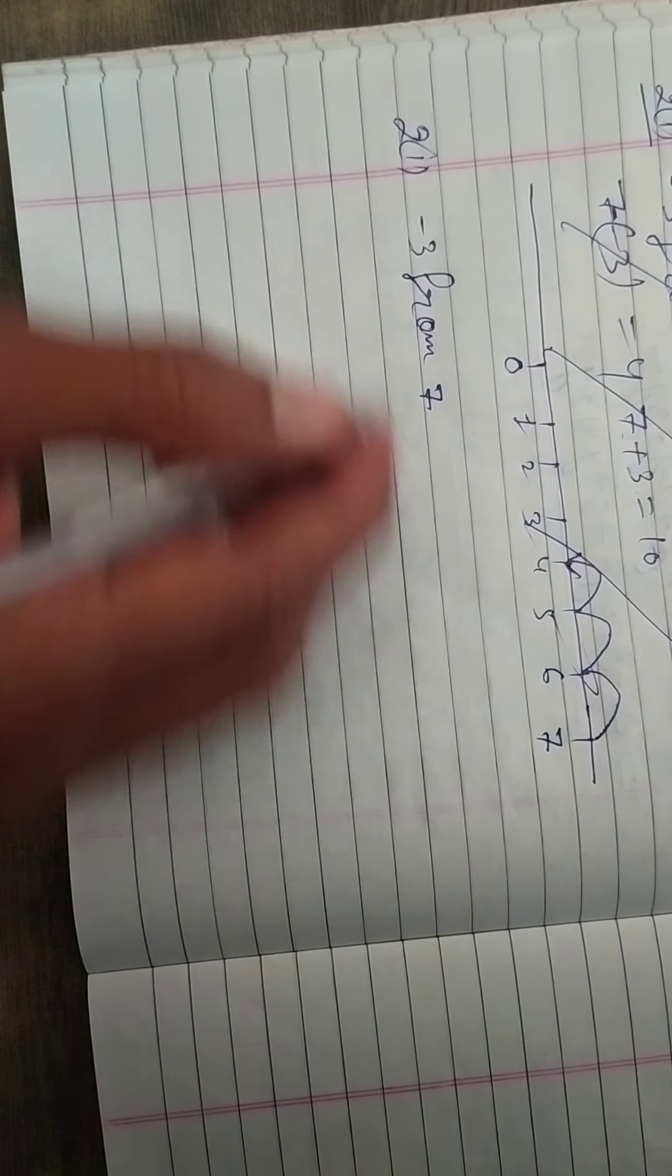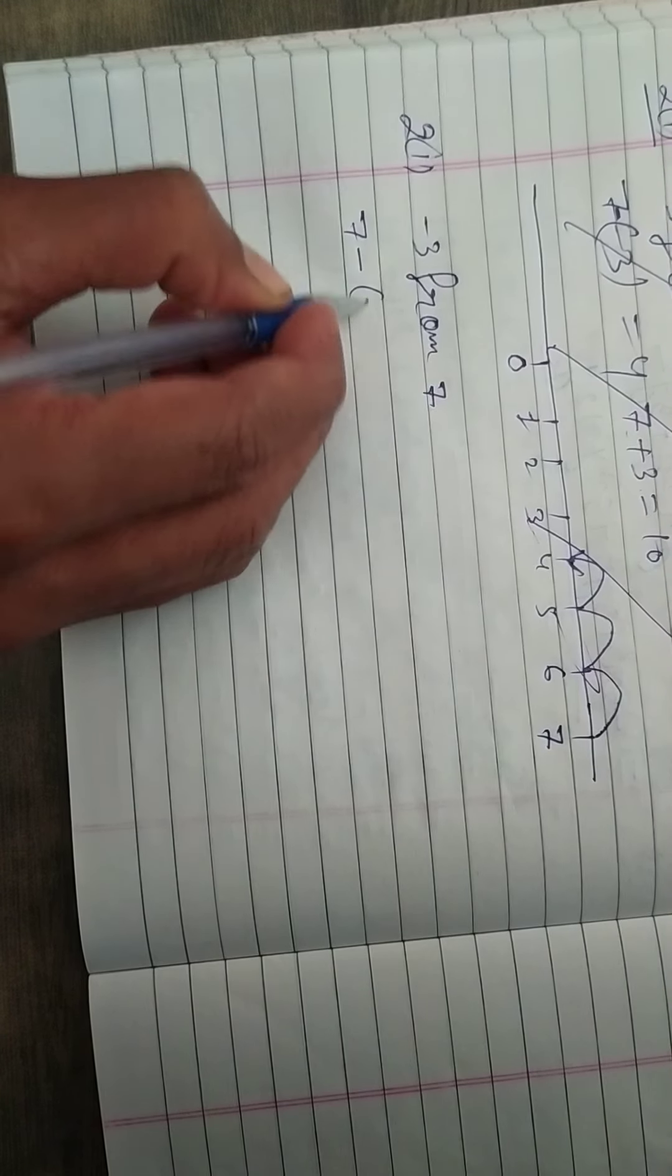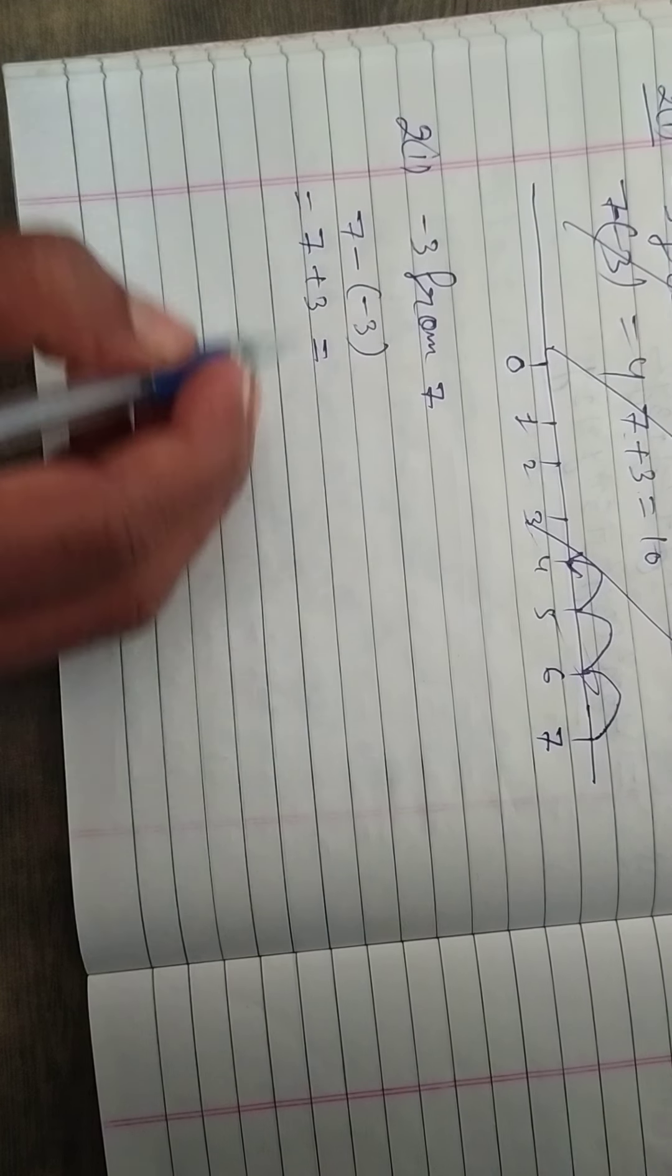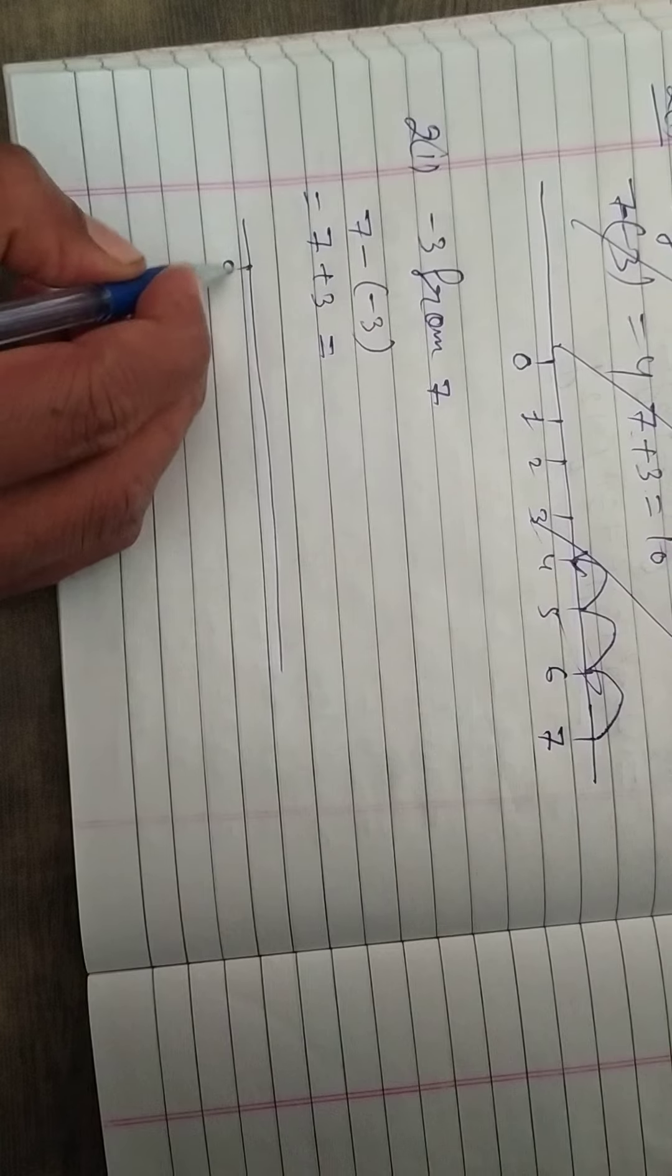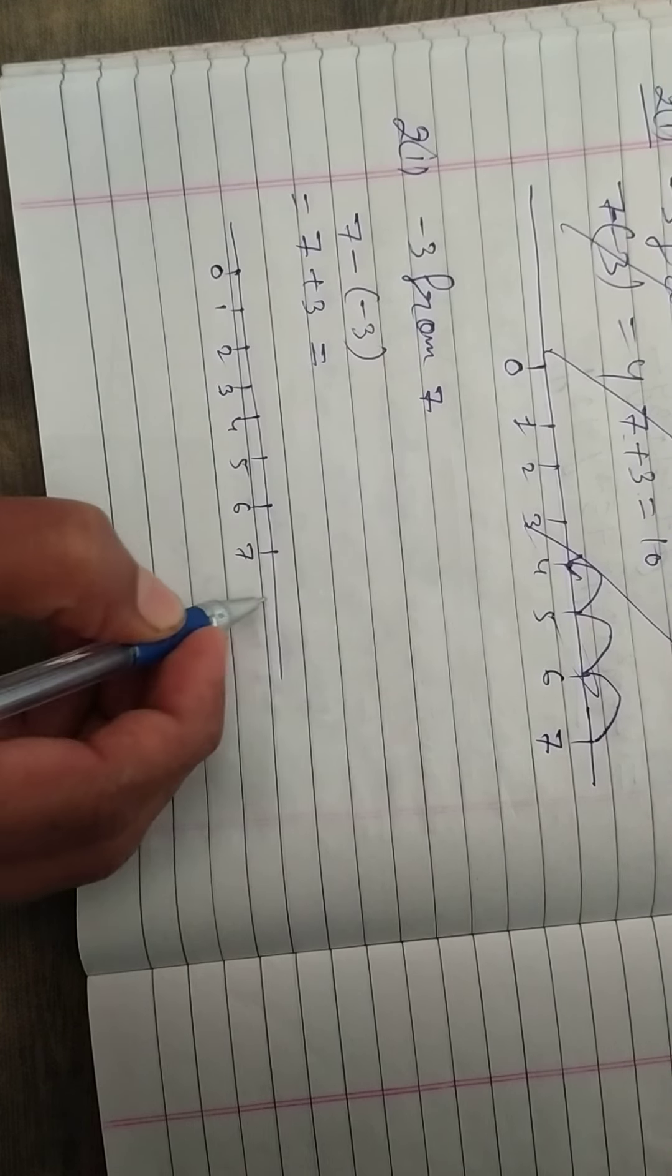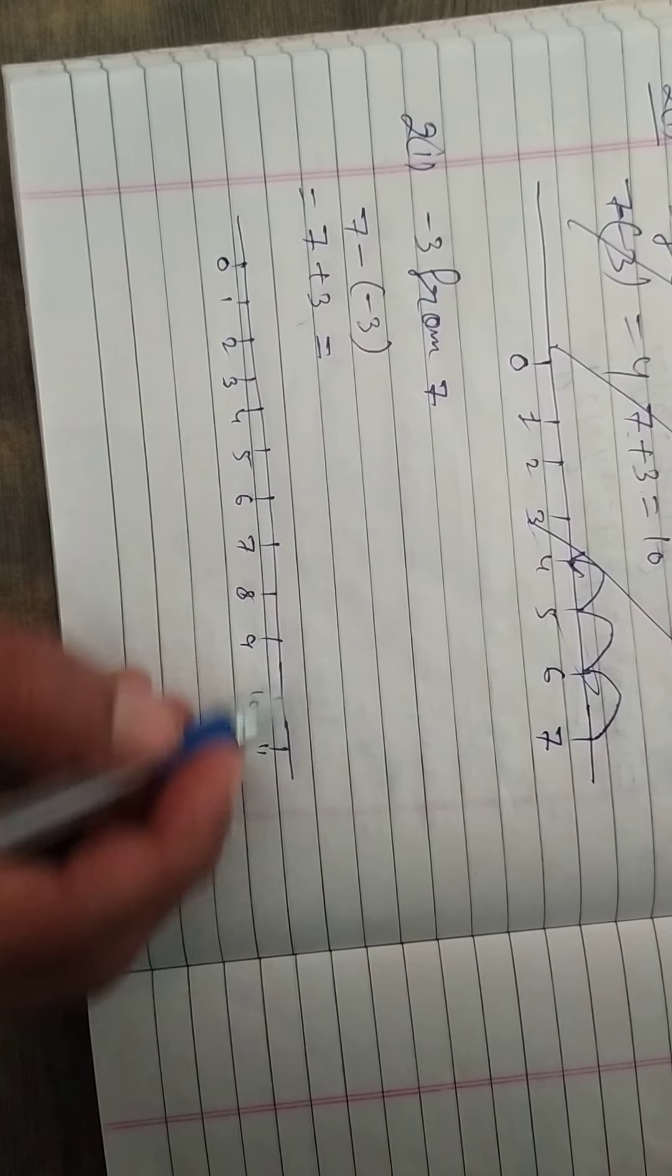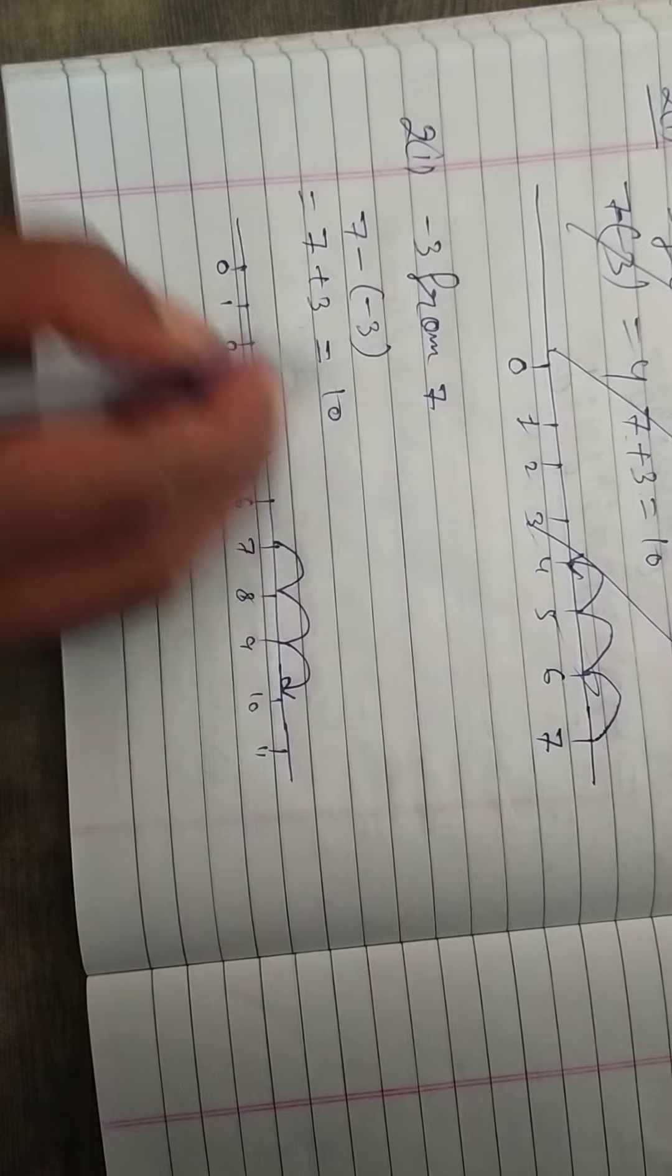I have already written it, see. 7 minus, I have to subtract minus 3. When I arrange it this way, children, what will happen? 7 minus minus plus 3, then it will be plus. That means we have to add 3. So look here, I have taken children 0, 1, 2, 3, 4, 5, 6, 7, 8, 9, 10, and 11. When we have to add 3 to 7, then 1, 2, 3. So we will reach here, okay.